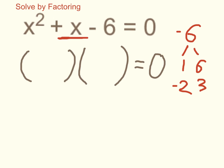Now, I can rewrite my trinomial as a product of two binomials using the factors that I've found here. So I get x minus 2 times, that's a positive 3, so x plus 3. And that's equivalent to my original equation, and it's equal to 0.